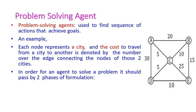The problem solving agent is used to find the sequence of actions that achieve goals. Here we have one graph representing cities. A is the start city — the starting state — and we have other cities B, C, D, and E. Our goal is to reach city E.